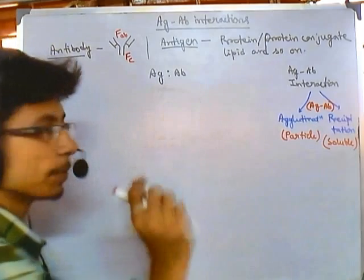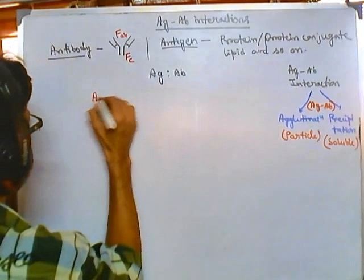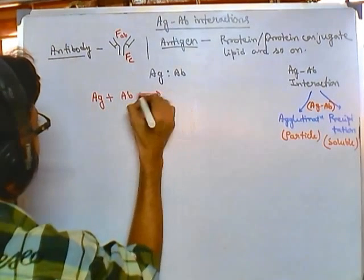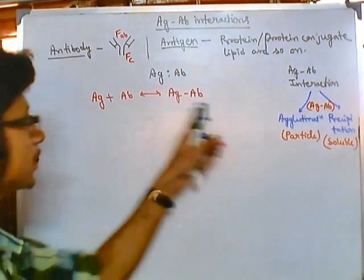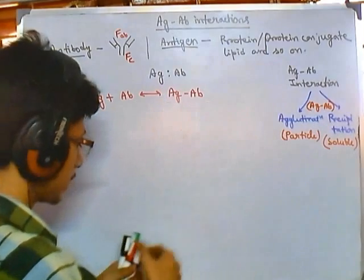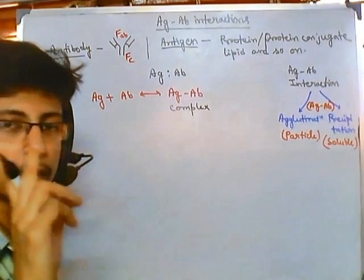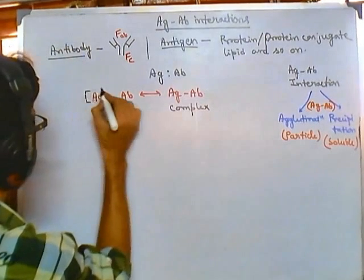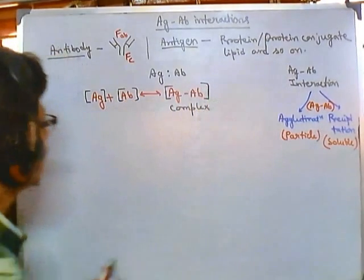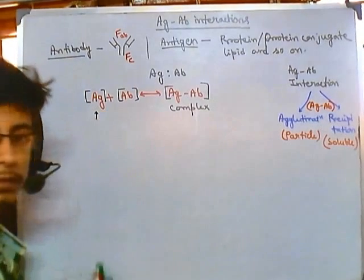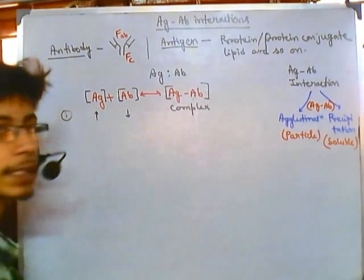Depending upon the concentration of antigen and antibody, because we are talking about a simple kind of reaction — antigen is provided, antibody is provided — what they produce is an antigen-antibody complex. For this formation, the concentration of both antigen and antibody matters. The concentration of antigen can be high or it can be low, so there are different possibilities to get an antigen-antibody complex.